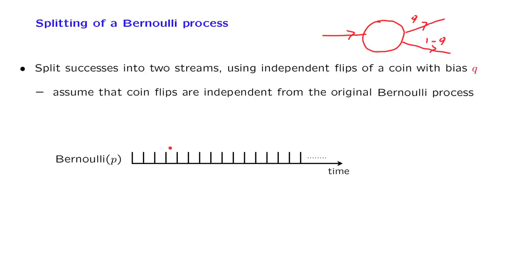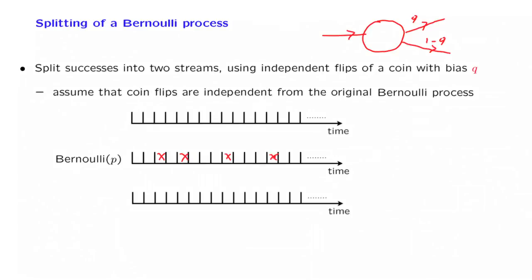Let us draw a picture. We have a Bernoulli process with parameter P, and arrivals get recorded at certain times. Each time that there is an arrival, we will flip a coin. And with probability Q, the arrival will be sent to that stream. With probability 1 minus Q, the arrival will be sent to the other stream.